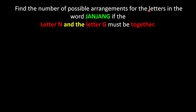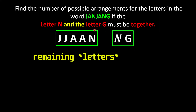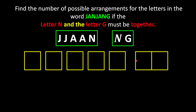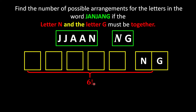We're going to find the number of possible arrangements for the letters in the word ZHANJANG if the letters N and G must be together. We put N and G in a box — stuck together — and treat the remaining letters individually. We notice there are double J, double A, and double N, giving three pairs of identical letters. We now have 6 objects to rearrange in 6 slots because the N and G box is treated as one single object.